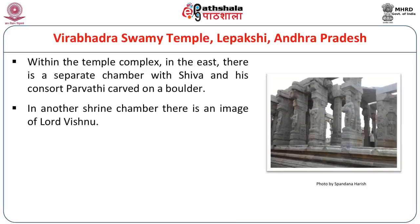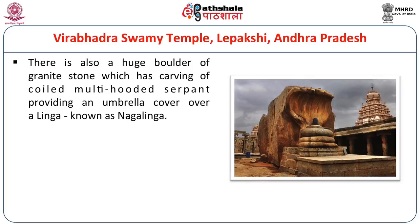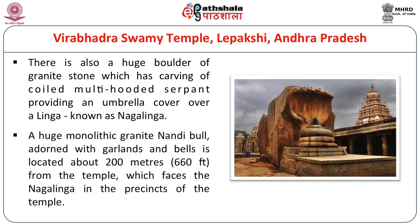Within the temple complex in the east, there is a separate chamber with Shiva and his consort Bhavati carved on a boulder. In another shrine chamber, there is an image of Lord Vishnu. There is a huge boulder of granite stone with a carving of a multi-hooded serpent providing an umbrella cover over a linga, known as the Nagalinga. The Lepakshi temple — the Veerabhadraswamy temple — is most famously known for this Nagalinga and the Nandi statue beside it. The huge monolithic granite Nandi, adorned with garlands and bells, is located 200 metres away from the temple and faces the Nagalinga.